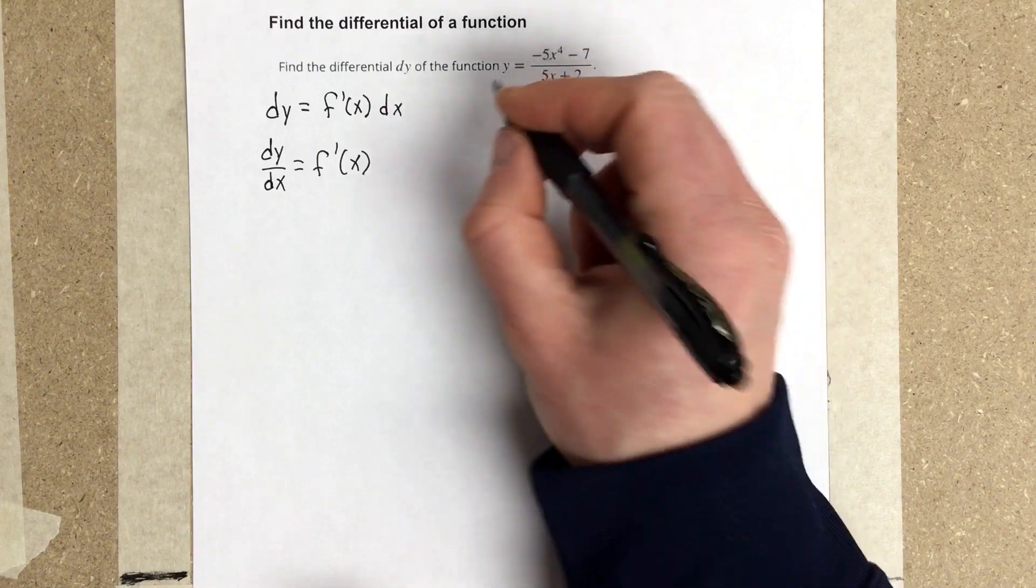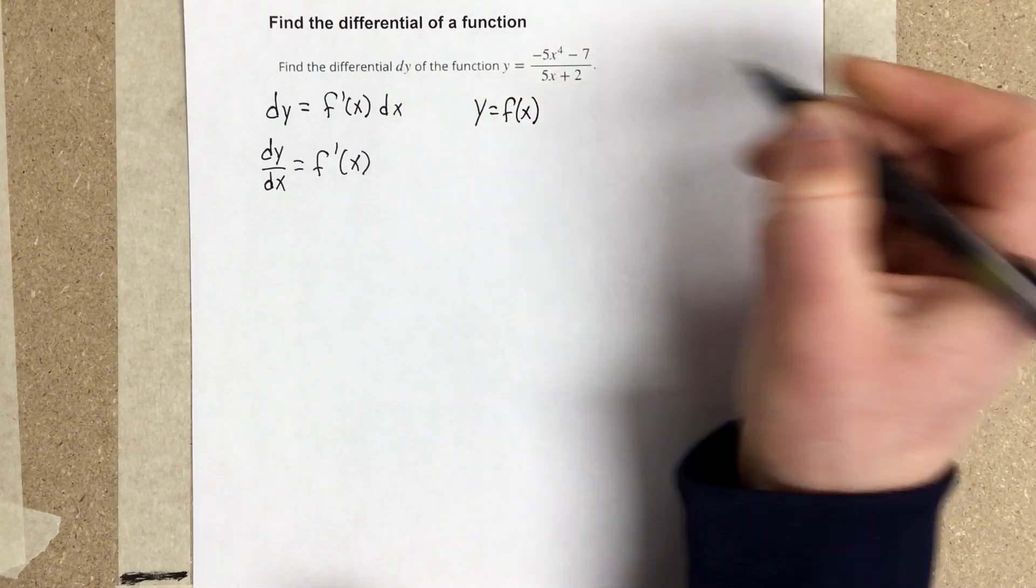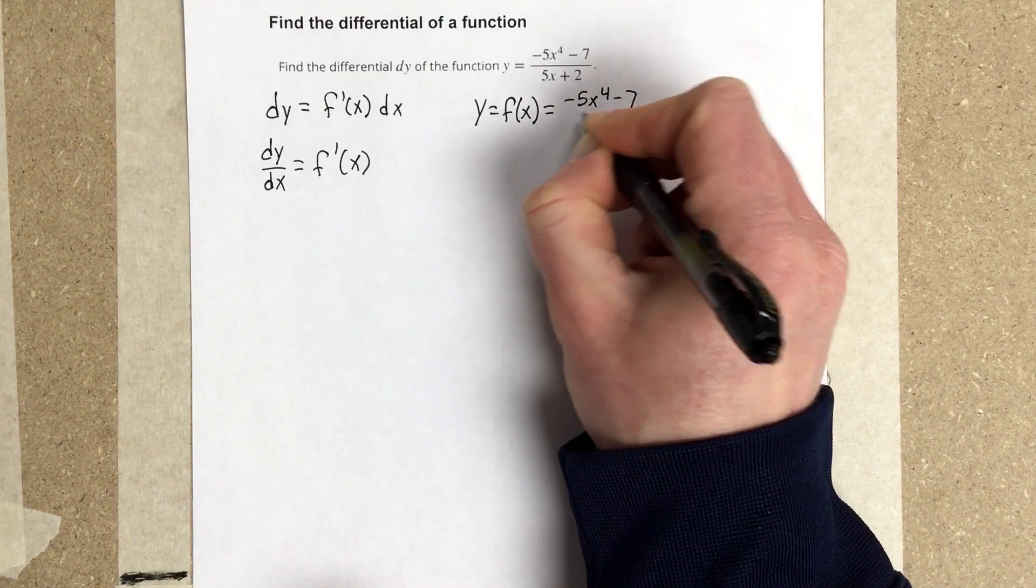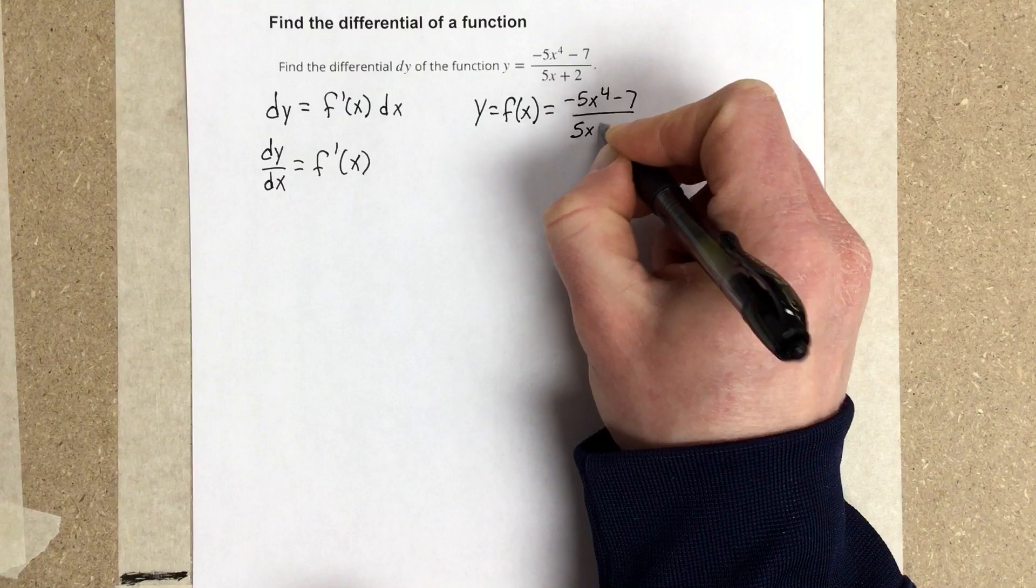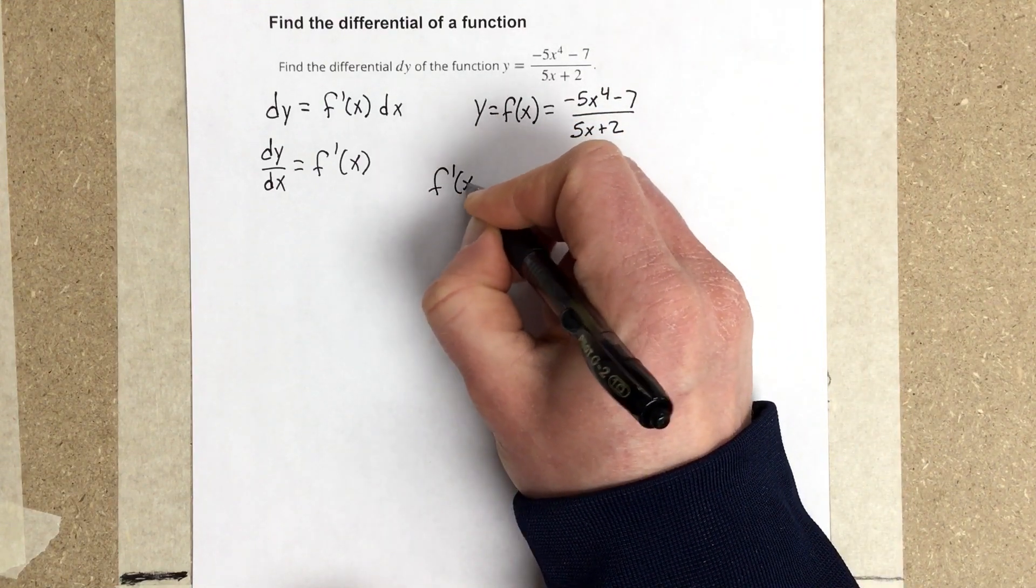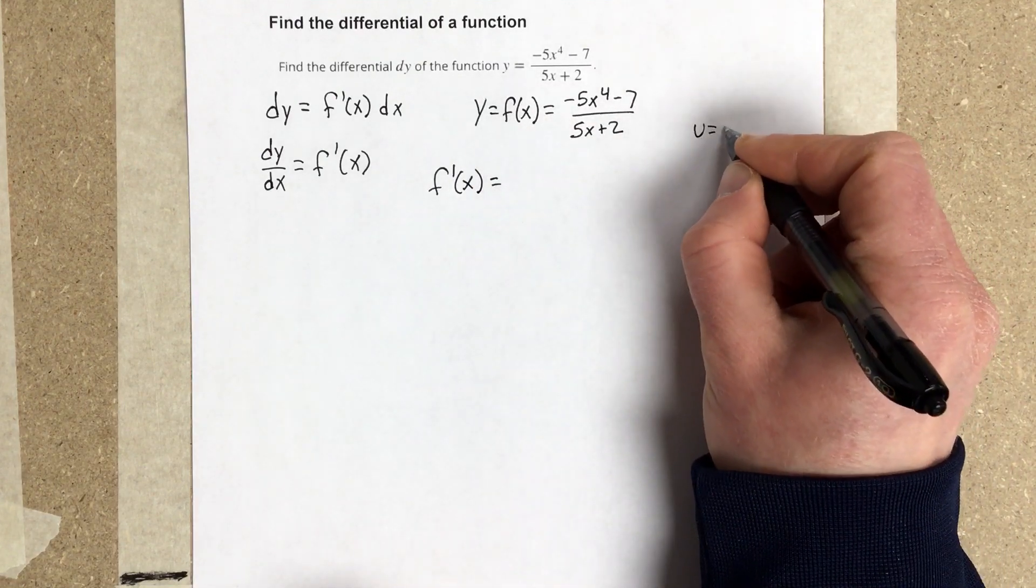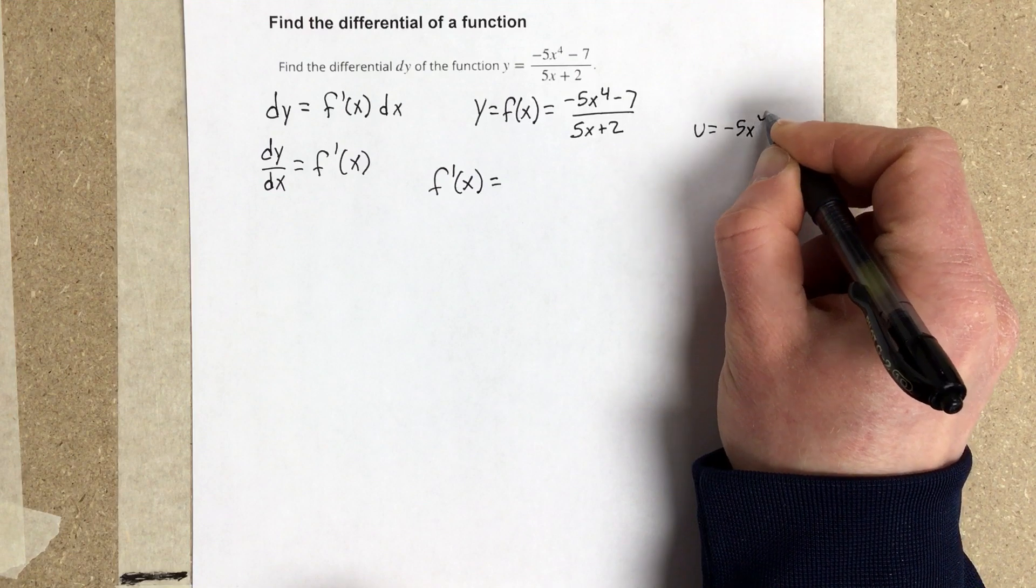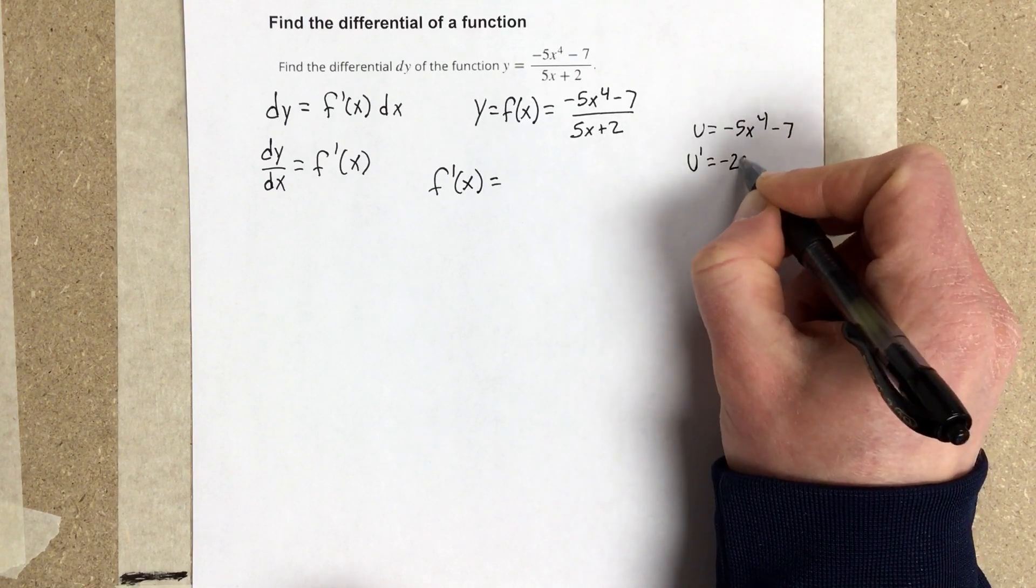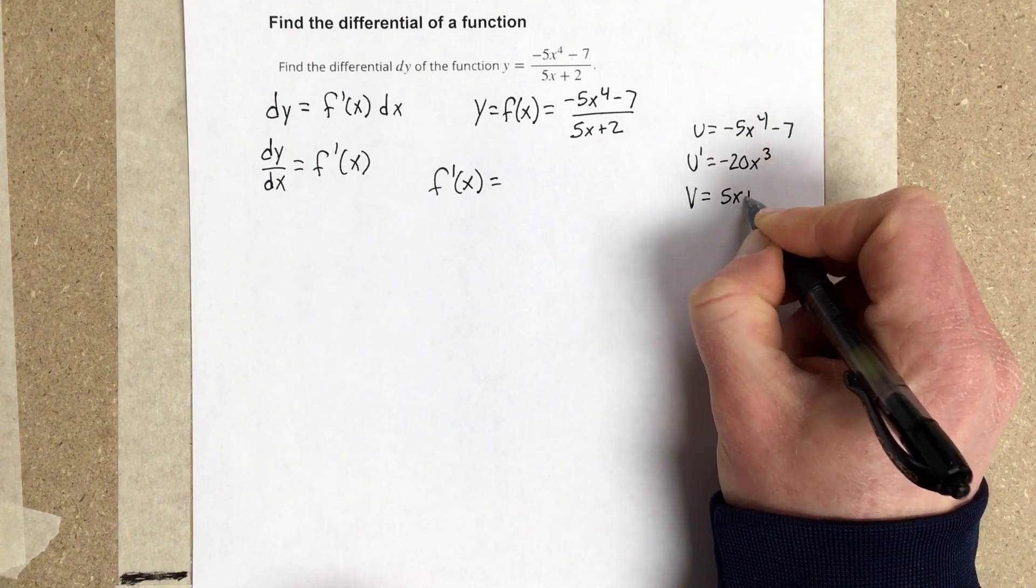So all I'm going to do is I'm going to find the derivative of this to start. I'm going to write that y is equal to f of x which is equal to negative 5x to the fourth minus 7 divided by 5x plus 2. Then I'm going to find f prime of x using the quotient rule. I'm going to write u equals negative 5x to the fourth minus 7, u prime would be negative 20x cubed, v is 5x plus 2.